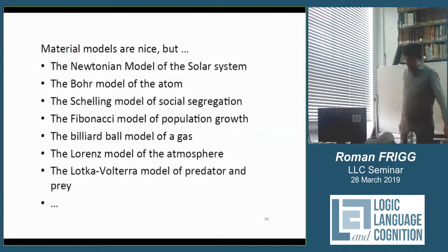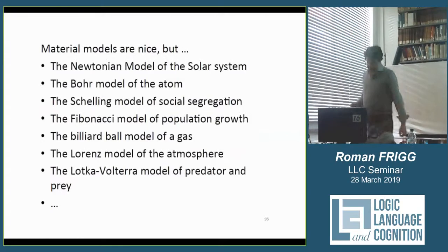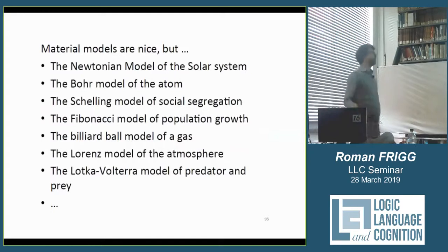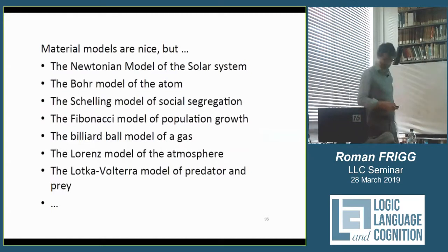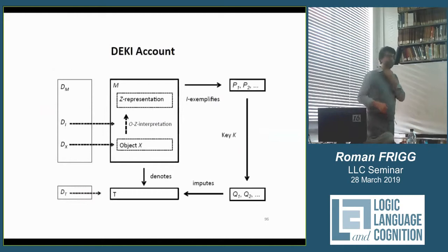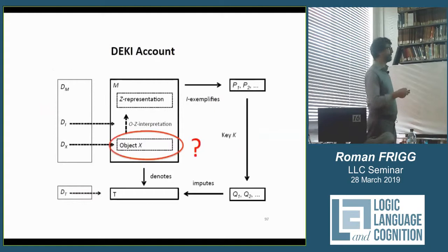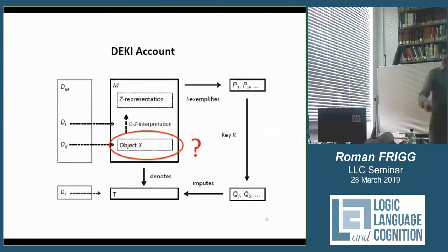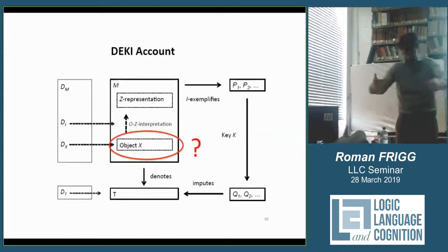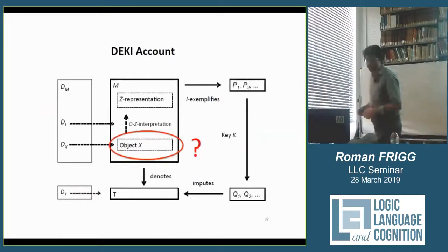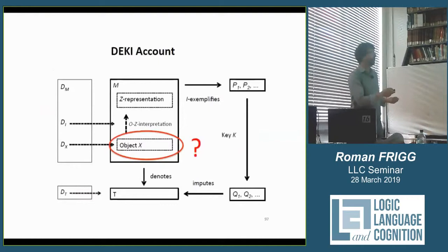Briefly: we've seen that not all models are material objects. Newton's model of the solar system is something you hold in your head, not in your hands, and many other models are of that kind. So what do we do with the scheme when we don't have a nice physical thing? The problem really is: what goes in the X slot? With the Phillips-Newlin machine, we have the thing rattling; with the Kendrew model, you have the plasticine sausage you can put on your desk. What do we do in the case of Newton?